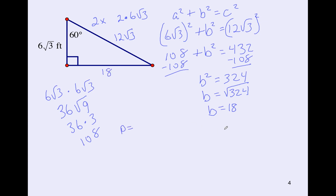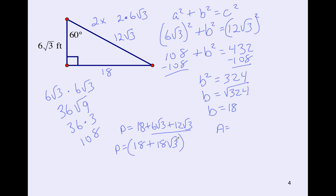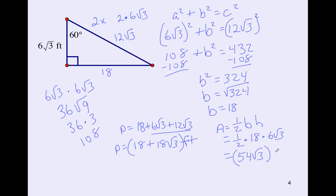Now pause the video and find the perimeter and area. The perimeter is 18 plus 6√3 plus 12√3. Combining like terms, it's 18 plus 18√3 feet. For area, one half of 18 times 6√3 — multiply the outside numbers, one half of 18 is 9, and 9 times 6 is 54 — giving an area of 54√3 feet squared.